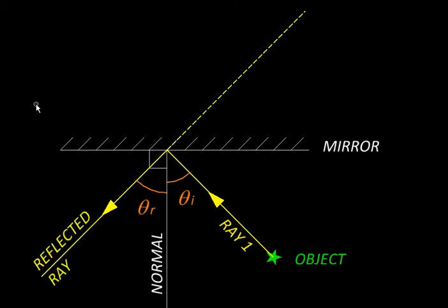So our eyes are going to see an image somewhere on this extended ray, but we don't know where yet. For that we are going to take another ray, and this time we will take a ray which is perpendicular to the mirror surface, so it becomes its own normal. So it makes an angle of incidence equal to zero, so angle of reflection is zero. In other words, the ray just gets reflected back on its own path.